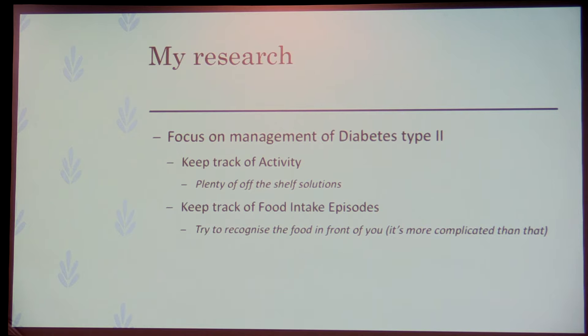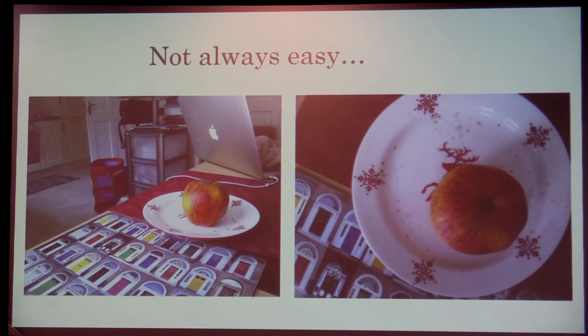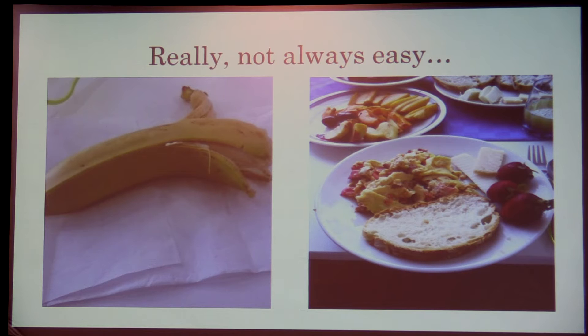Image recognition is difficult. It's the same apple, but as you can see in one picture there's just an apple, a plate, and a few doors. The other picture has an apple, a plate, doors, a laundry basket, half a kitchen computer, some hands — there's loads of stuff in there. There's a banana peel that you're probably not going to eat — but have you already eaten the banana? Or sometimes people mix bacon, eggs, strawberries, cheese, and bread on the same plate, and you don't really know how much of that they are going to eat, or whether those pieces of fruit are shared among many people.